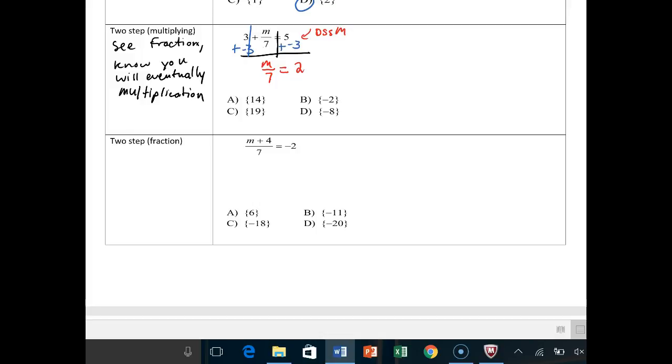And then we finish it off by multiplying both sides by 7, times 7, times 7. So M is equal to, M is equal to 14, right?